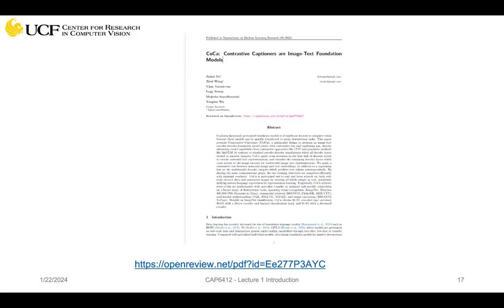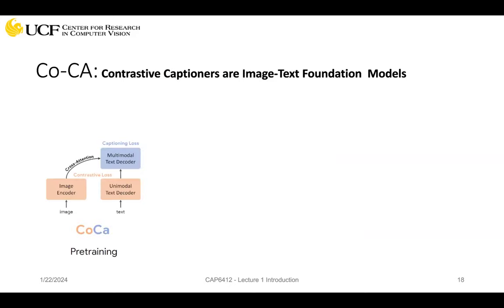This was in 2022. The idea is very simple — very similar to the CLIP model. On the left we have the image encoder with an image as input. On the right, we have decomposed the text decoder into two parts: one is unimodal, which serves like a text encoder as in CLIP, and then we have the blue part, which is the multimodal text decoder, getting input not only from text but also from the image. We do cross-attention, resulting in two losses: one is the contrastive loss, and the other is the captioning loss.